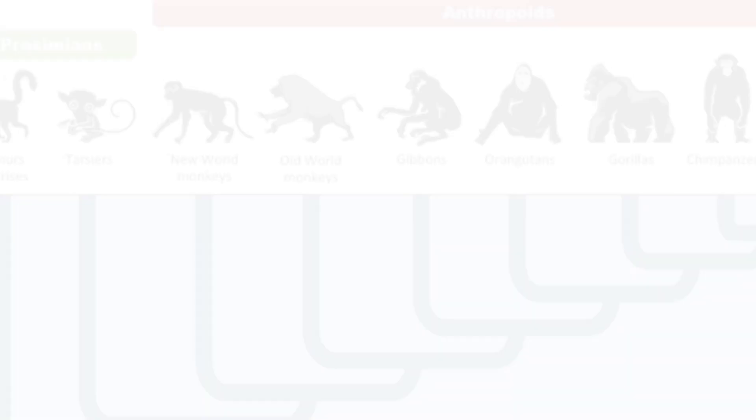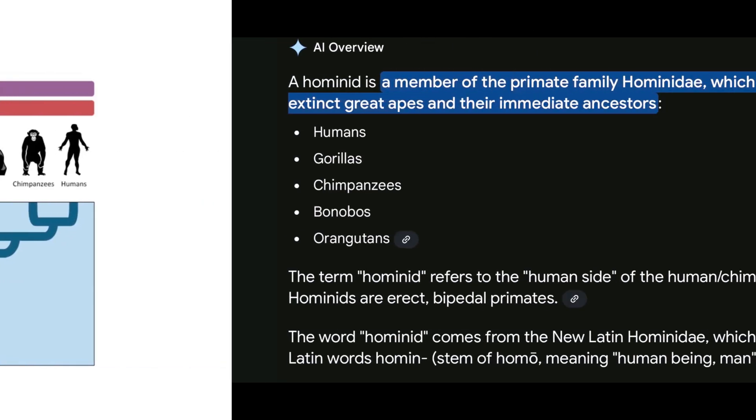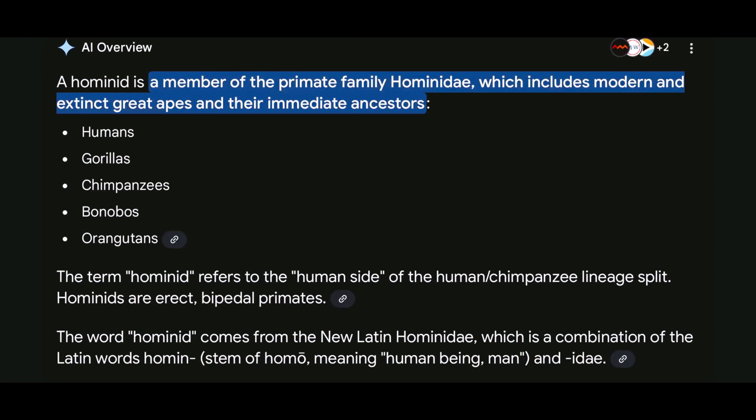Wood, 2010, discussed the different views of this taxonomy. A chimpanzee clade was posited by Wood and Richmond, who referred it to the tribe Panini, which was envisioned from the family Hominidae being composed of a trifurcation of sub-families.